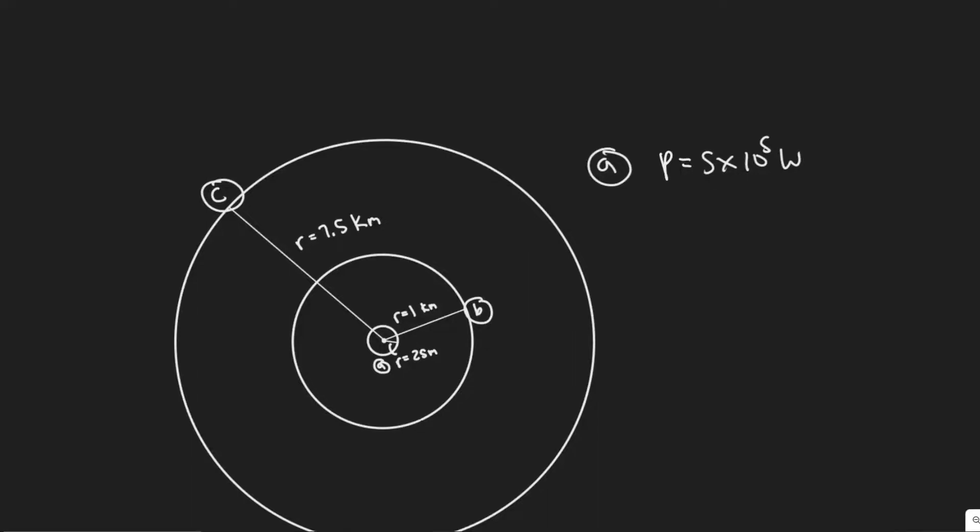In this problem, we are told a jet plane emits 5 times 10 to the 5 joules of sound energy per second. Part A: what is the sound level 25 meters away? Air absorbs sound at a rate of about 7 decibels per kilometer. Calculate what the sound level will be at B, 1 kilometer, and C, 7.5 kilometers away from this jet plane, taking into account air absorption.